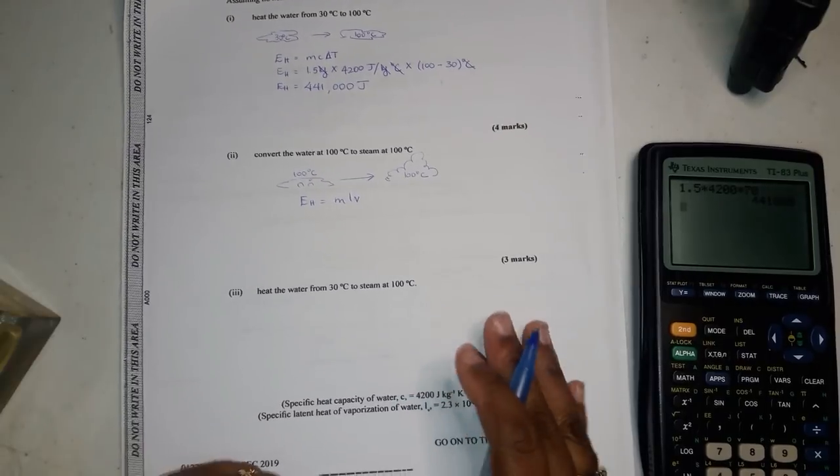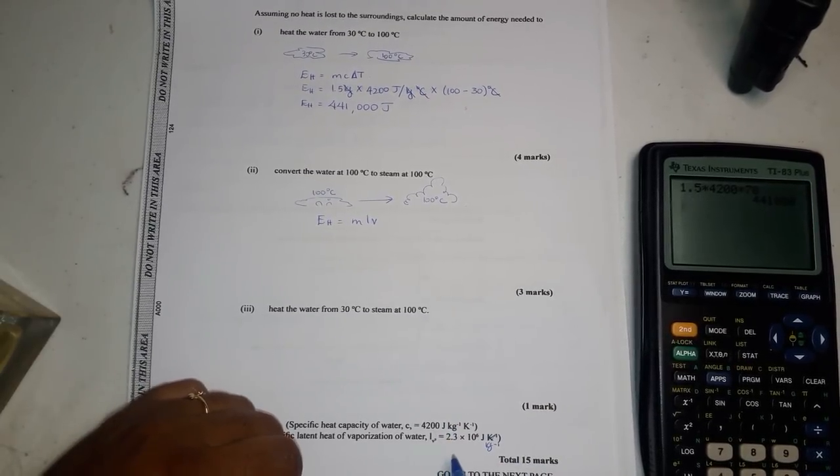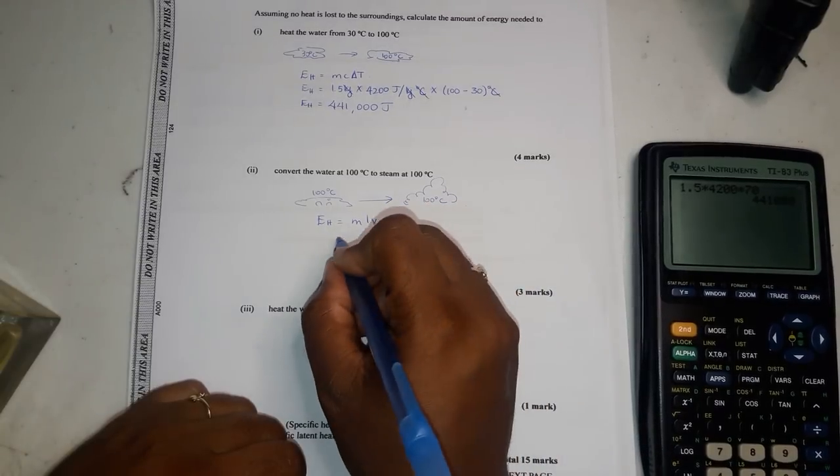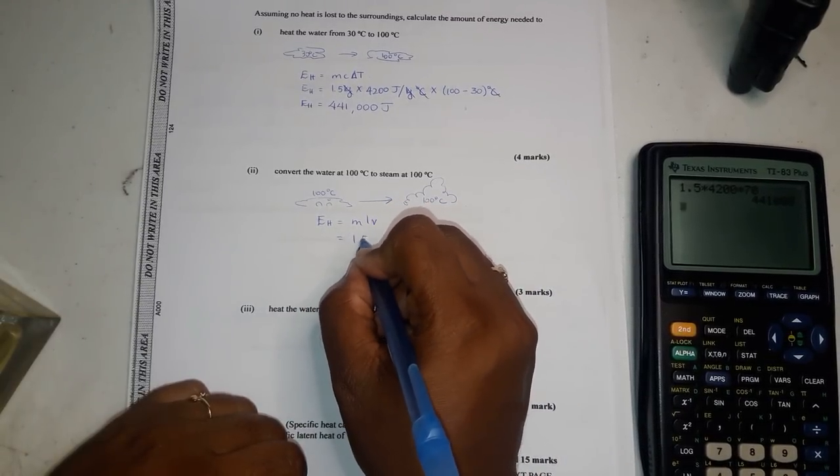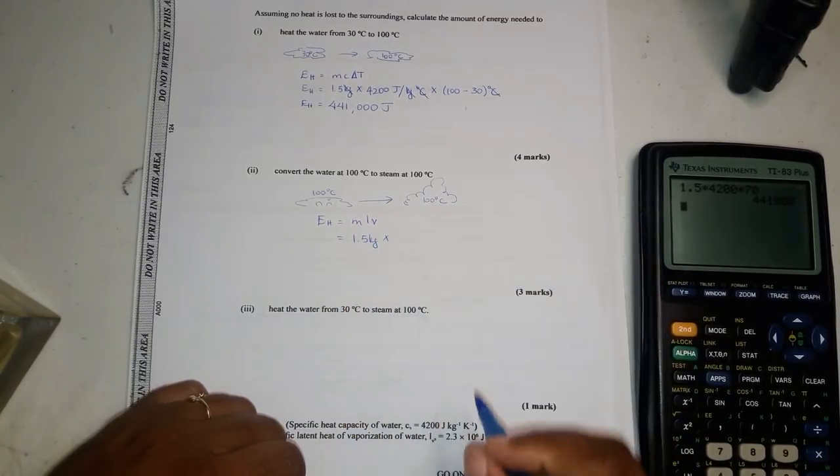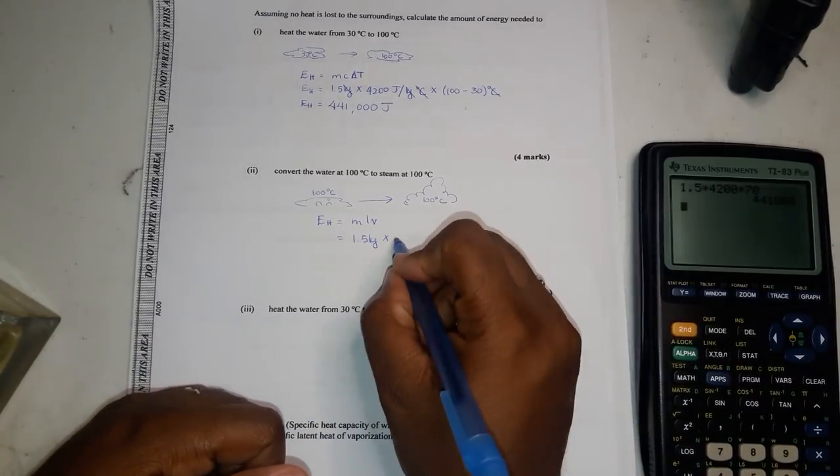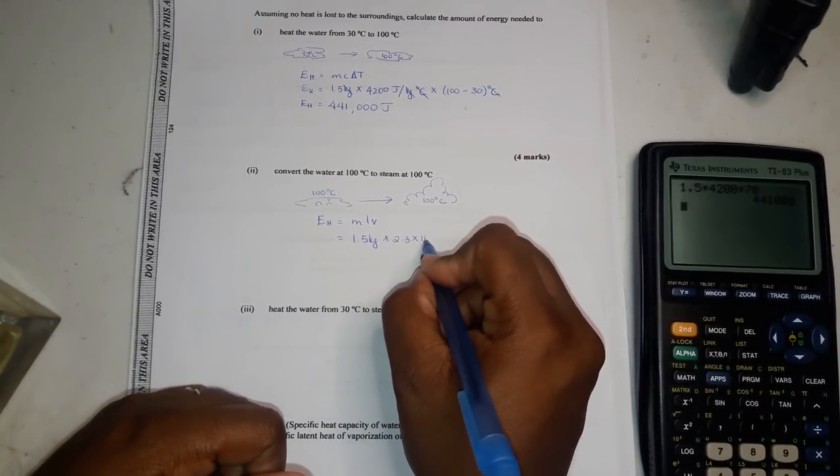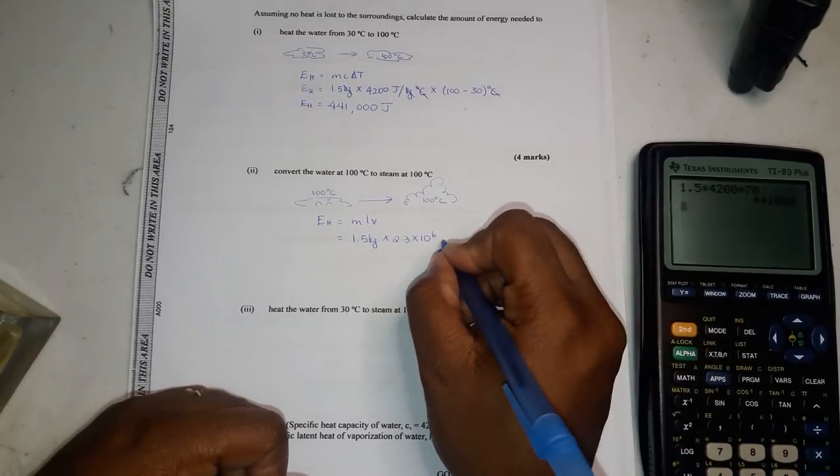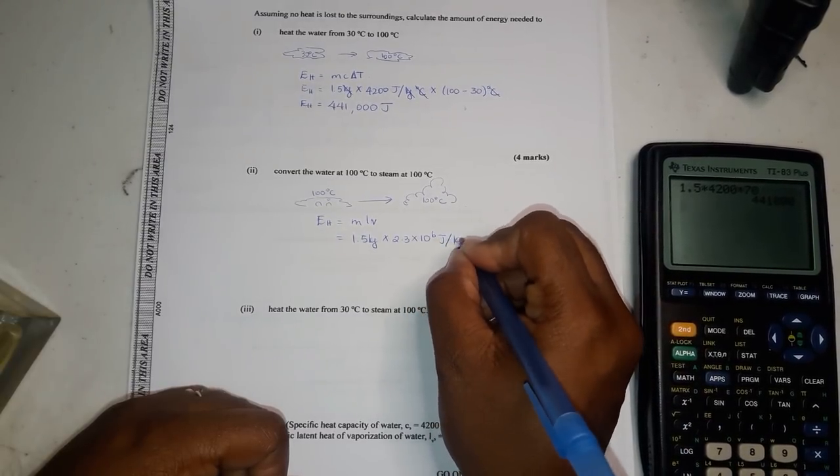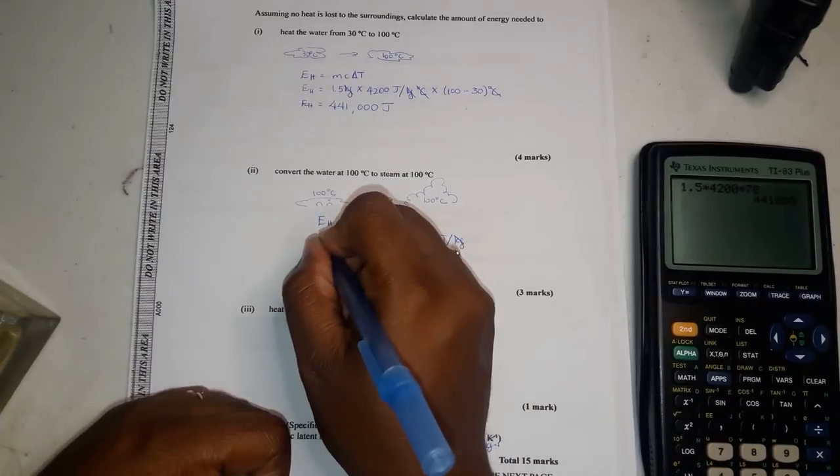So we're going to use EH equal to mLv because it's vaporization going on here. And again, we have the numbers down here. It's 2.3 times 10 to the 6 joules per kilogram. So you know, the mass is 1.5 kg and latent heat of vaporization of water is 2.3 times 10 to the 6 joules per kilogram.